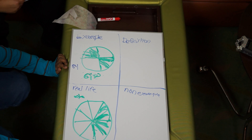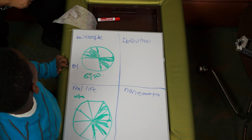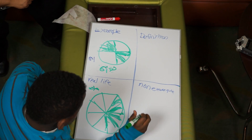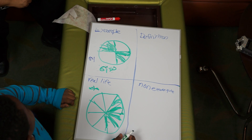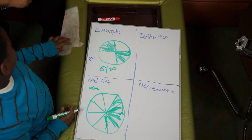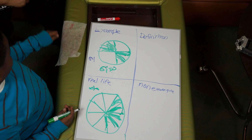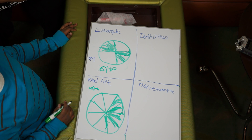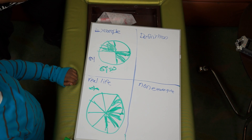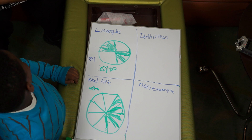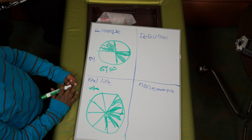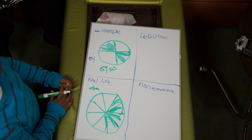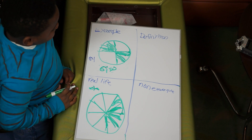Can you give me a non-example of a fraction — something that's not a fraction? Nothing comes to mind? Okay. So in summary, what is your definition of a fraction? It's like dividing it — it's like pieces of something.